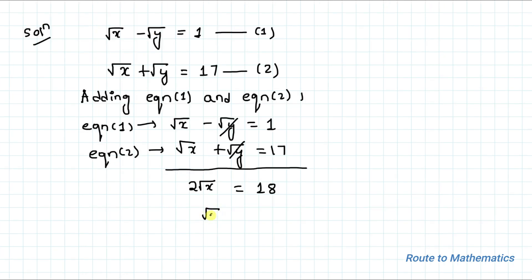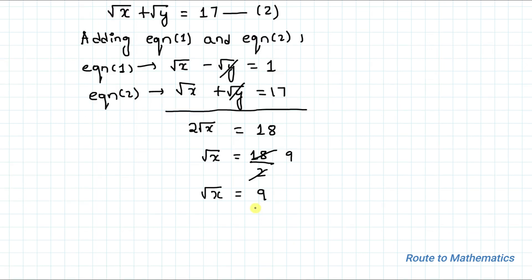So root x equals 18. Here 2 is multiplied with root x. If I take it to the right hand side it will get divided, and root x equals 18 divided by 2. 18 divided by 2 is 9, so root x equals 9.